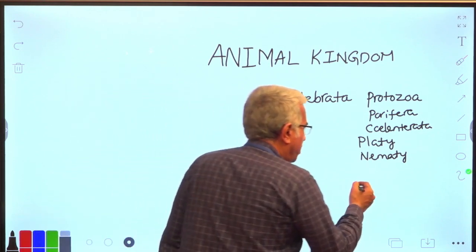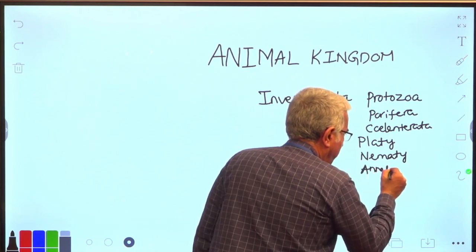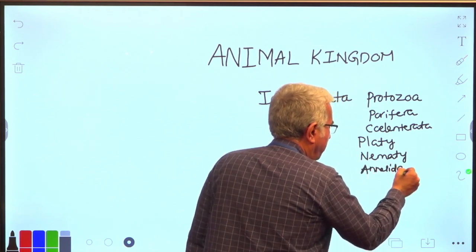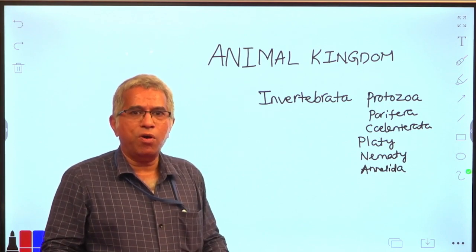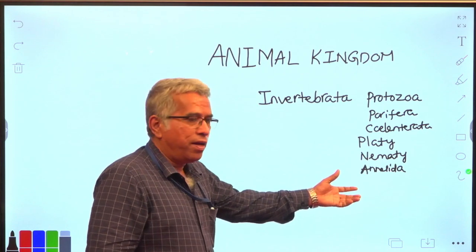After that, it is followed by annelida. This annelida is represented by free-living earthworm and parasitic leech.